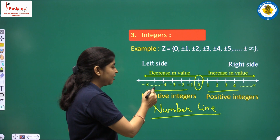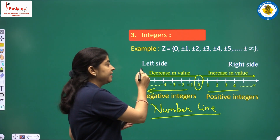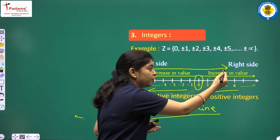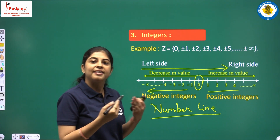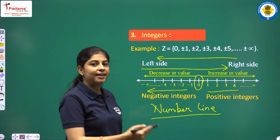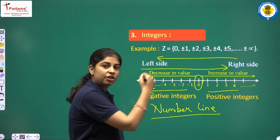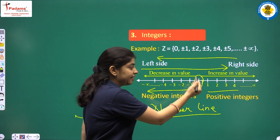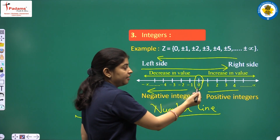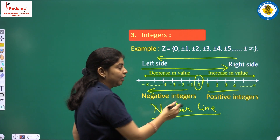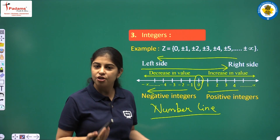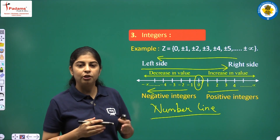As we move from left hand side to right hand side of a number line, the value increases. As we move from right to left, the value decreases. For example, minus 2 is less than minus 1, minus 1 is less than 0, and 0 is less than 1. So integers are the set or combination of positive and negative numbers including 0.